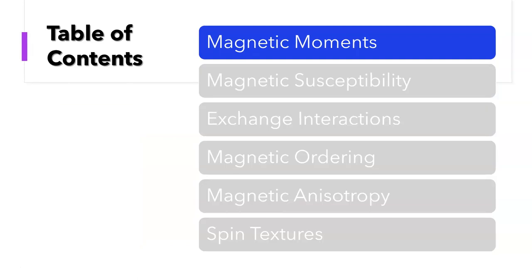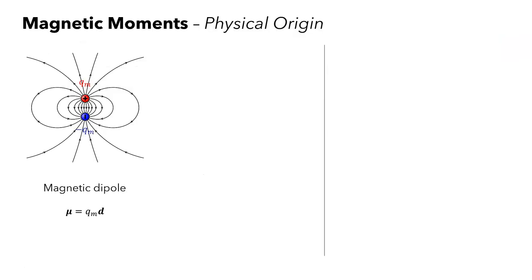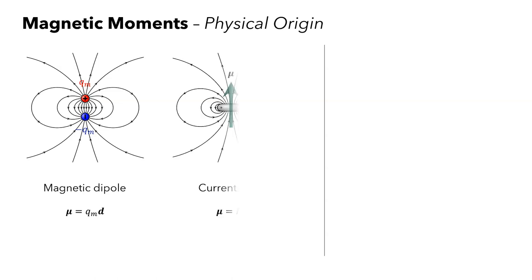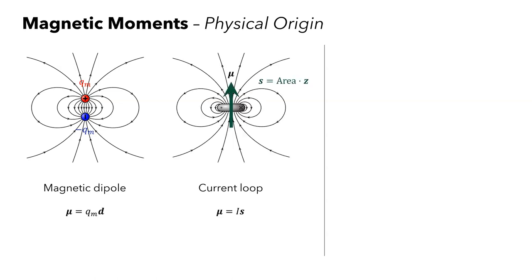The fundamental building blocks of magnetic materials are magnetic moments. Historically, people used to treat magnetic moments in a very similar way as electrical dipoles, which consists of a pair of magnetic charges of opposite signs. Today we know this picture is quite wrong. It was Ampere who proposed a different picture, where magnetic moments originate from circulating currents or current loops, not from charges.